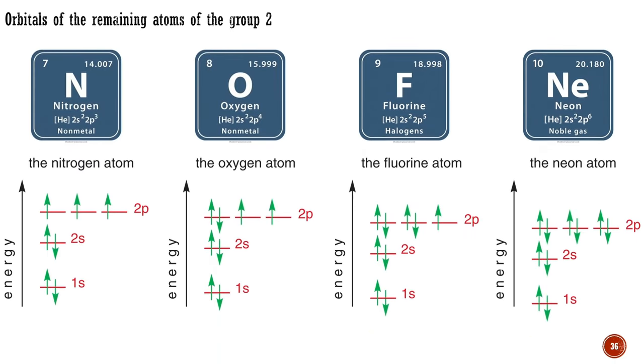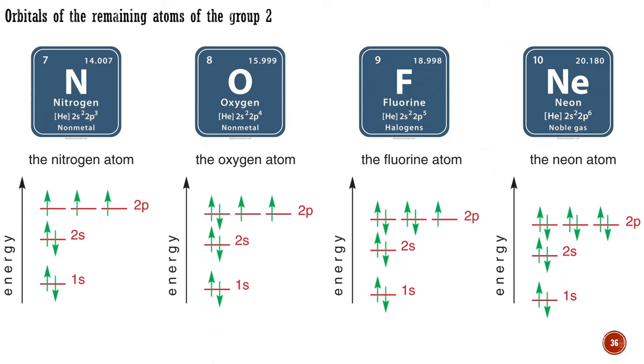Not surprisingly, the orbitals of atoms of the remaining elements of the first row of the periodic table are occupied as shown here. As the entire set of orbitals goes down in energy due to the nucleus attracting the electrons more strongly, filling up the 2p orbitals first singly and then doubly is a straightforward process. With the 10 electrons of neon, all the orbitals with one node are filled and we say that neon has a closed shell. A shell is a group of orbitals of similar energy all with the same number of nodes.